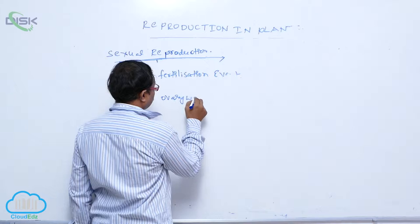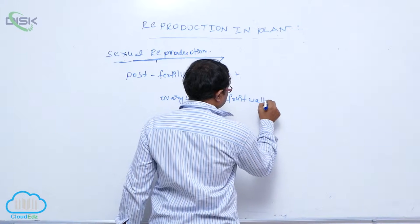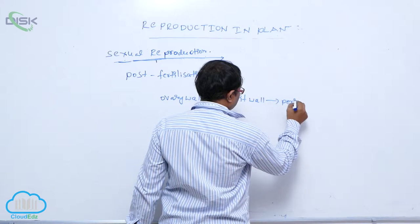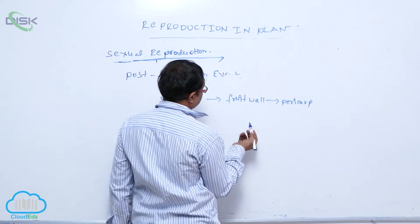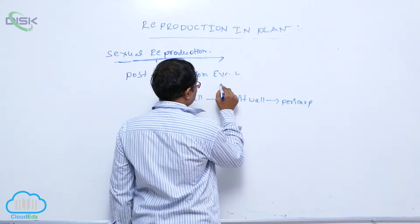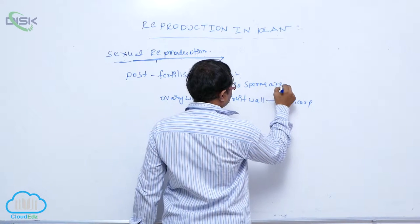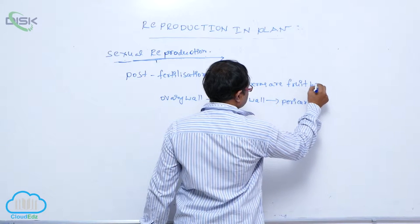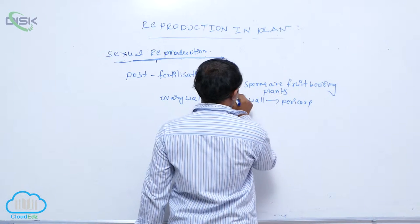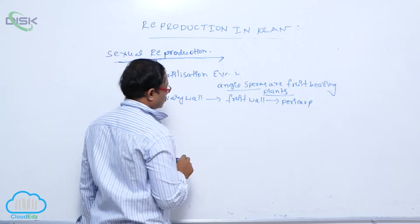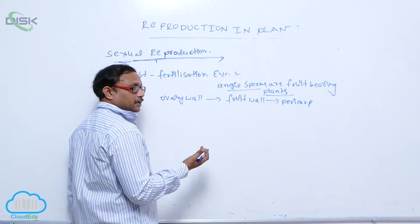The ovary wall converts into the fruit wall, which is known as the pericarp. The most important character of angiosperms is that they are fruit-bearing plants. After maturity, seeds are liberated from the fruit.